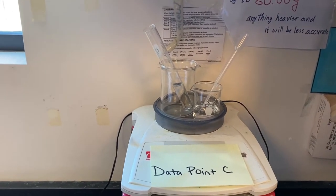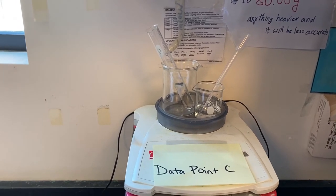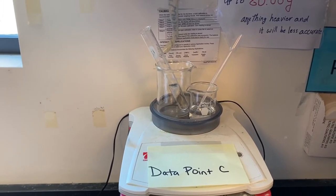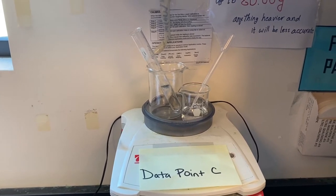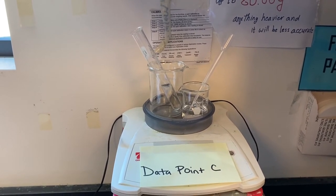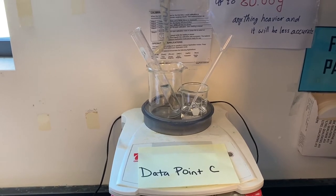Again, data point C, I have my 150 ml beaker, my test tube with the contents after the reaction, the 50 ml beaker, the excess HCl that I did not use, and that same original dropper. Data point C.